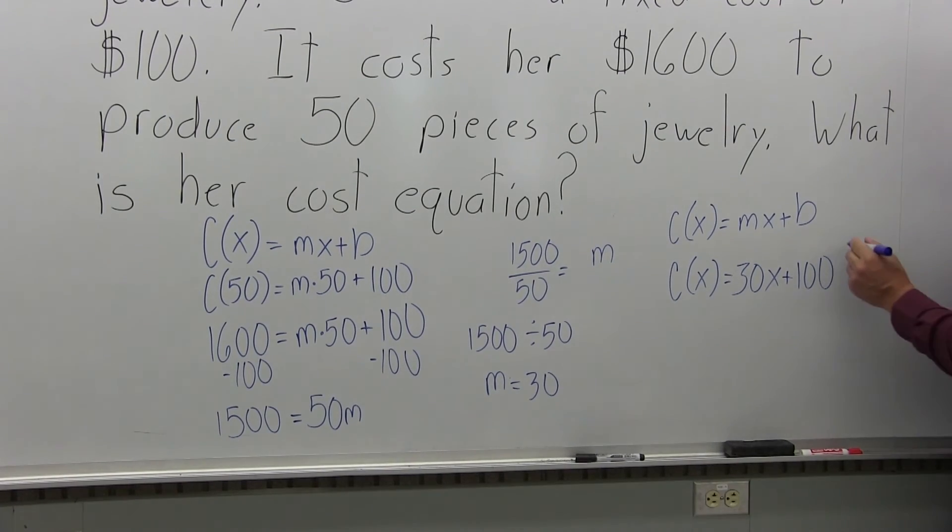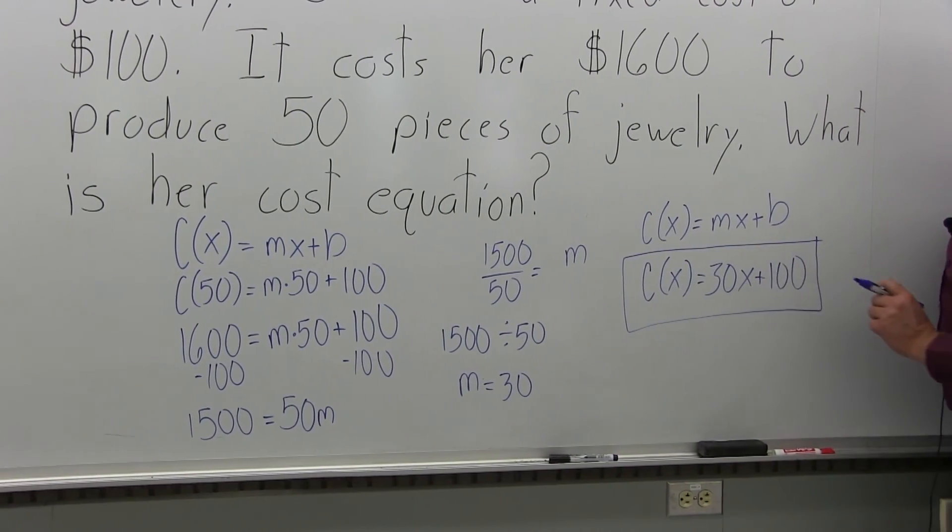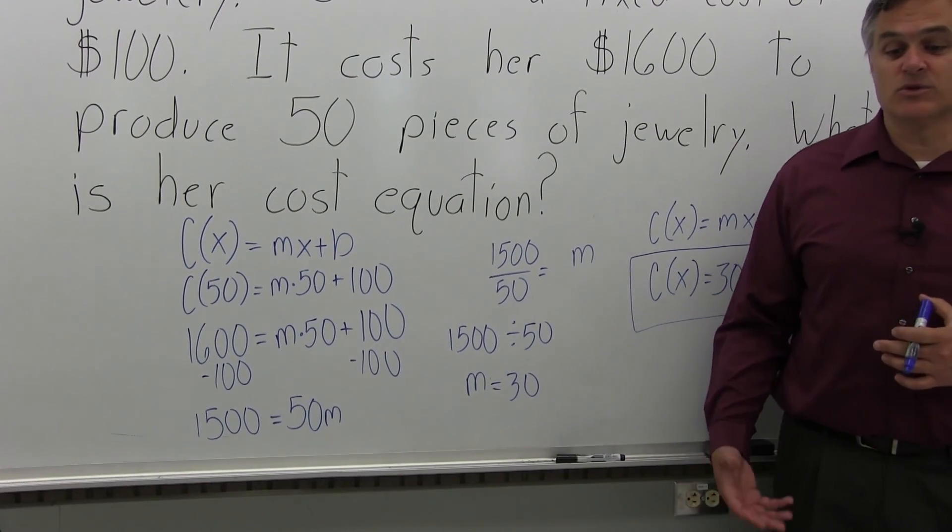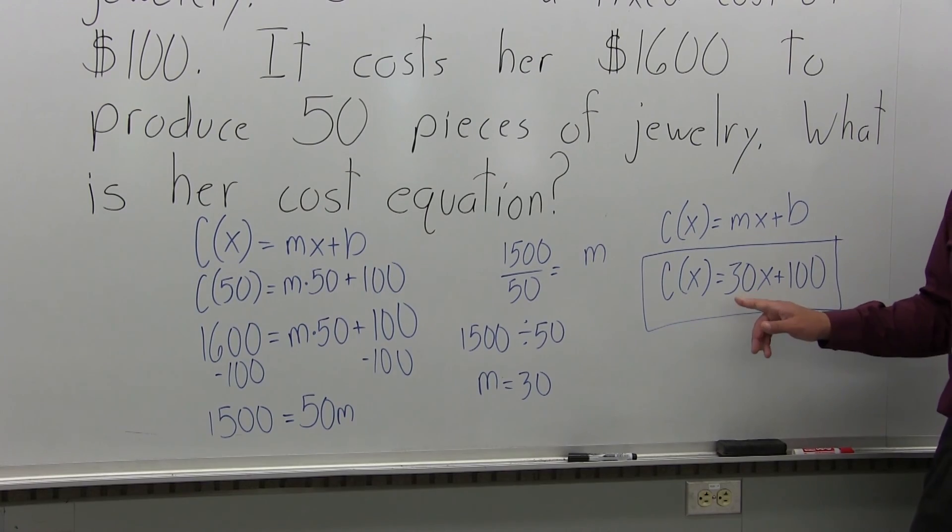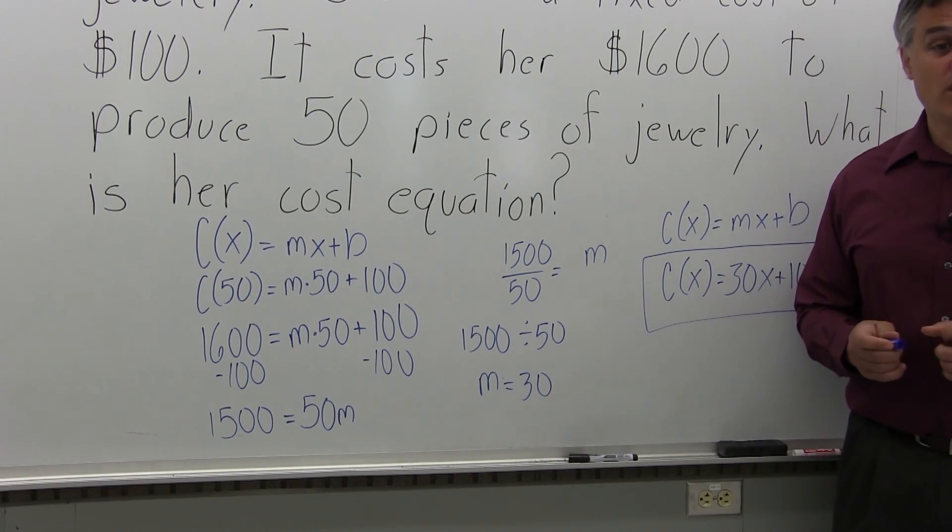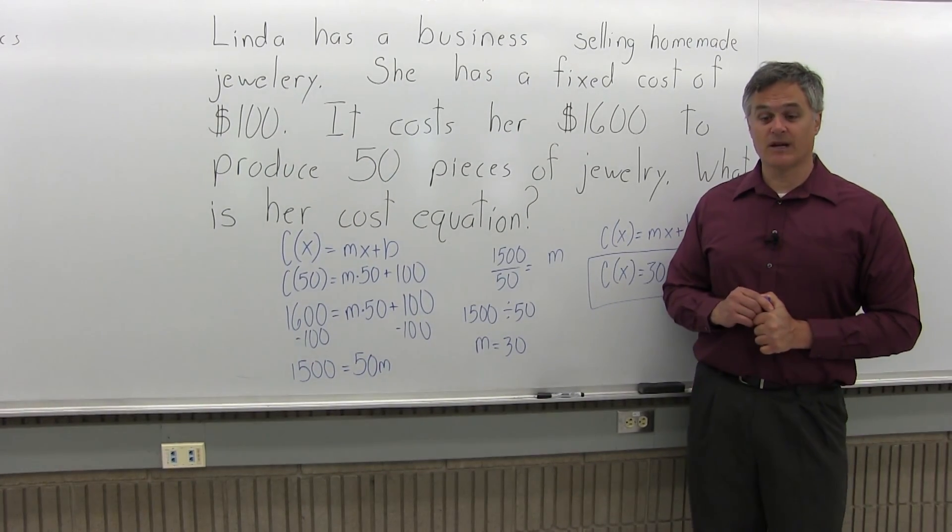This is the cost equation. With this now, we can find the cost to produce any number of items. Whatever number of items you want to know the cost of producing, put that value in for X, and you can find the cost to produce 100 items or 1,000 items or however many you would like to find.